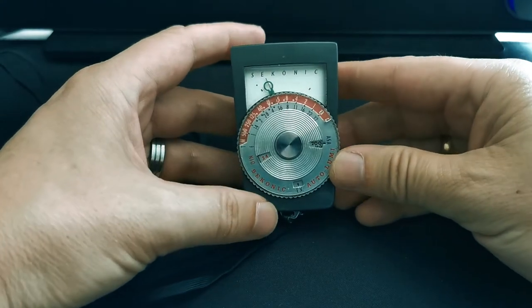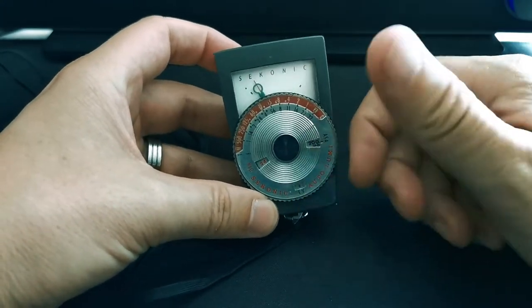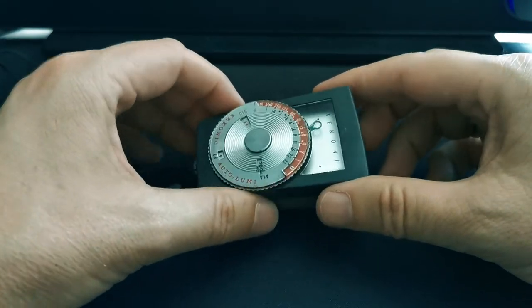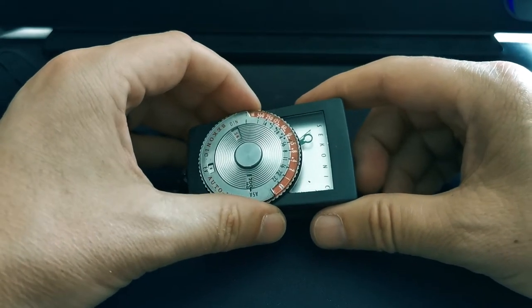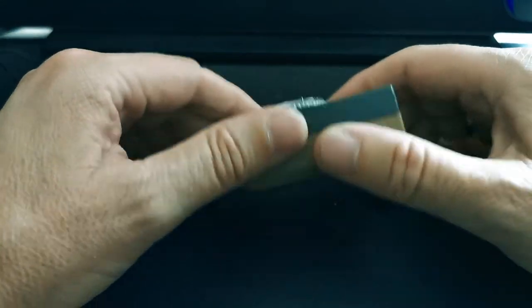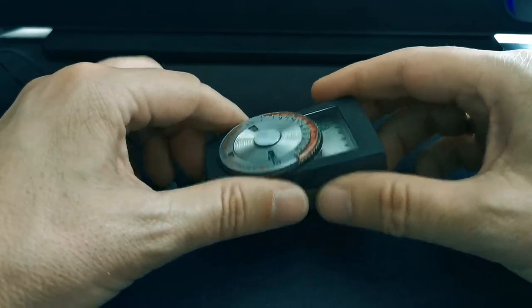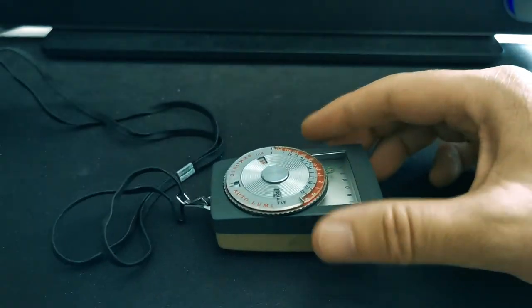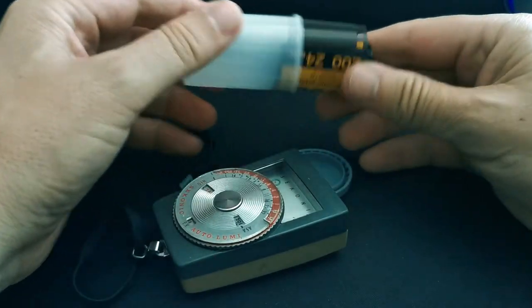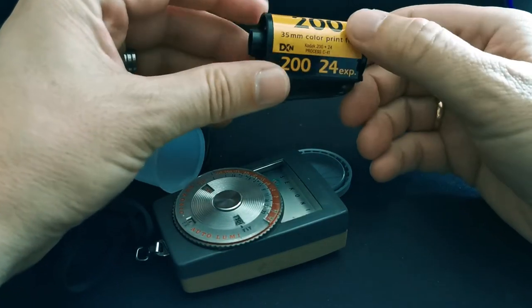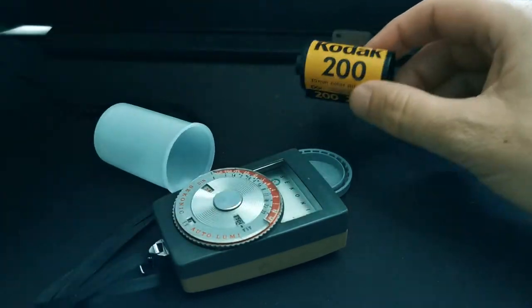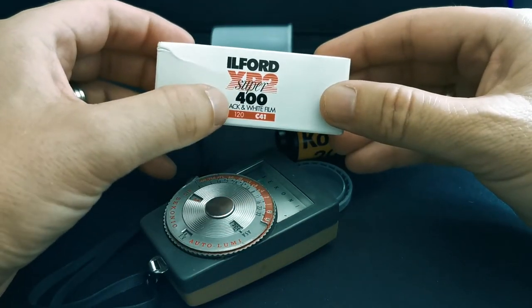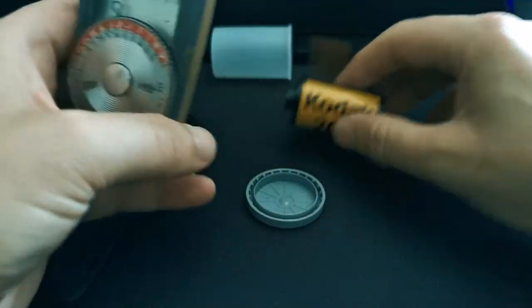The first thing we need to do before we do anything else is we need to tell the light meter what speed film we're using. I've discussed in previous videos that analog film, much like a modern digital camera, has an ISO or ASA setting, and basically what that is is an indicator of how responsive the film is to light, how quickly it reacts to light. So I've got a couple of films here. For instance, there's a 35 millimeter here, makes it quite obvious in big writing that this is 200 ASA. I've got another one here, different type of film, 120 film, but this is 400 ASA. So we need to tell the light meter what speed of film we're using.